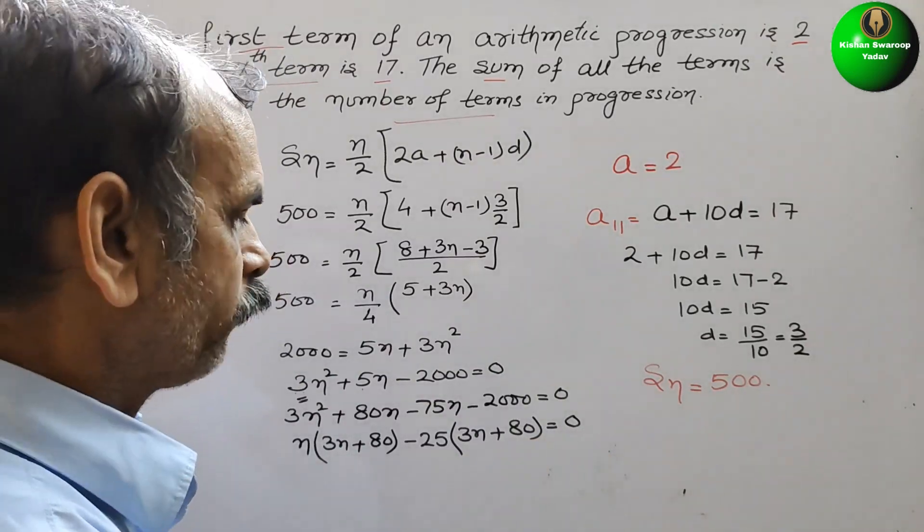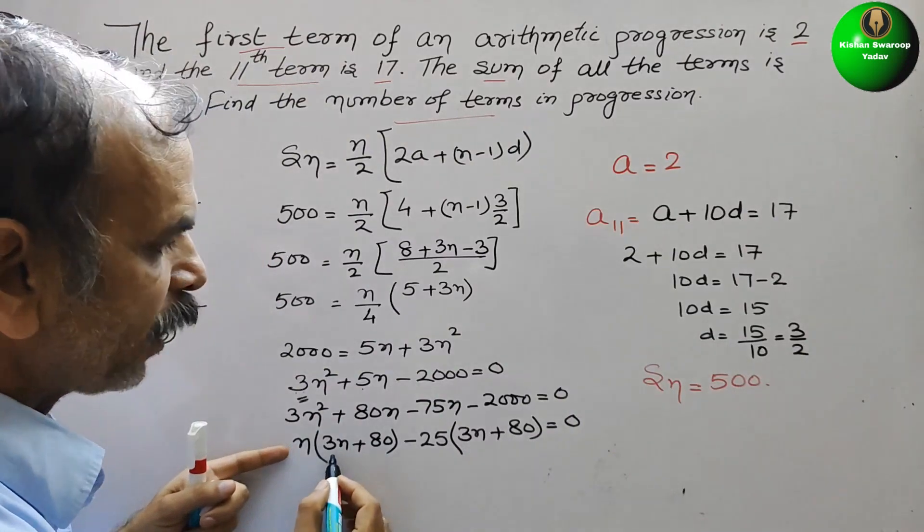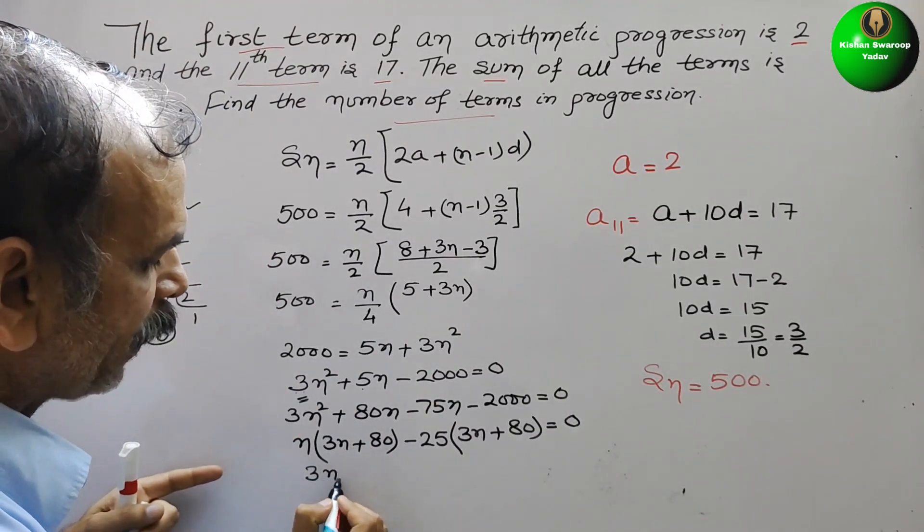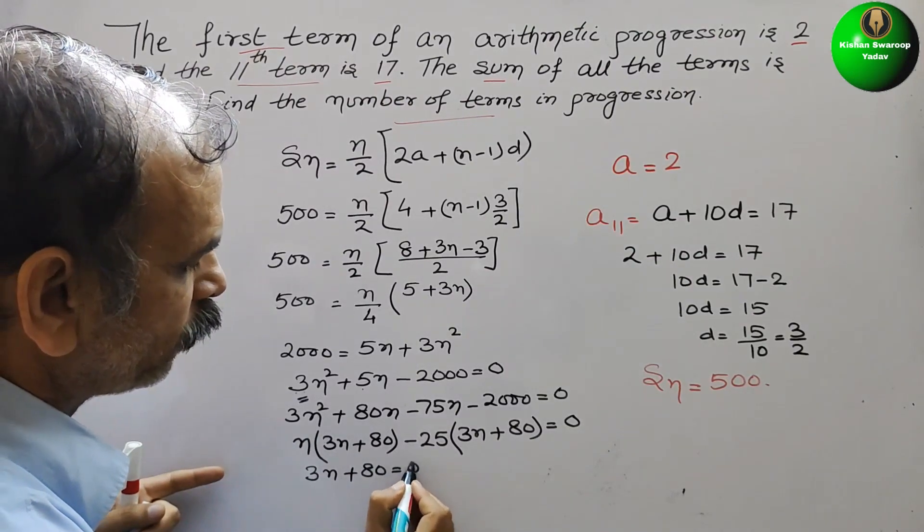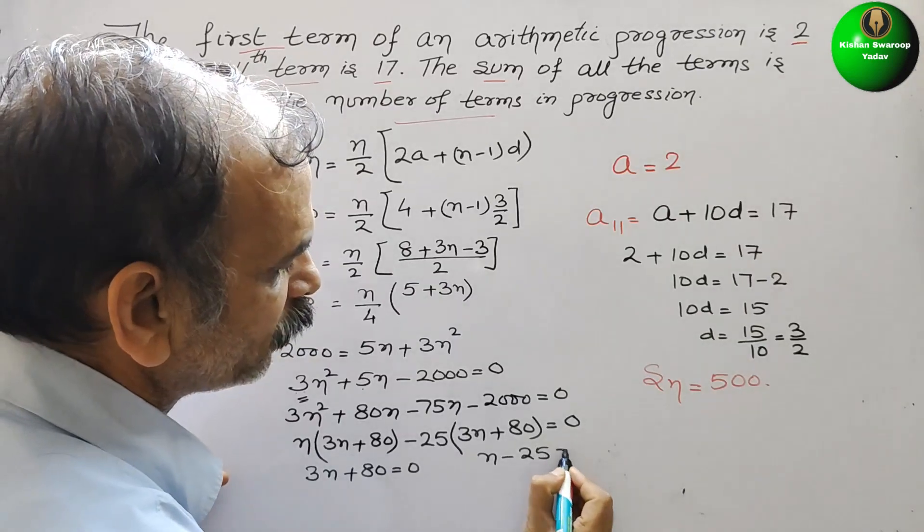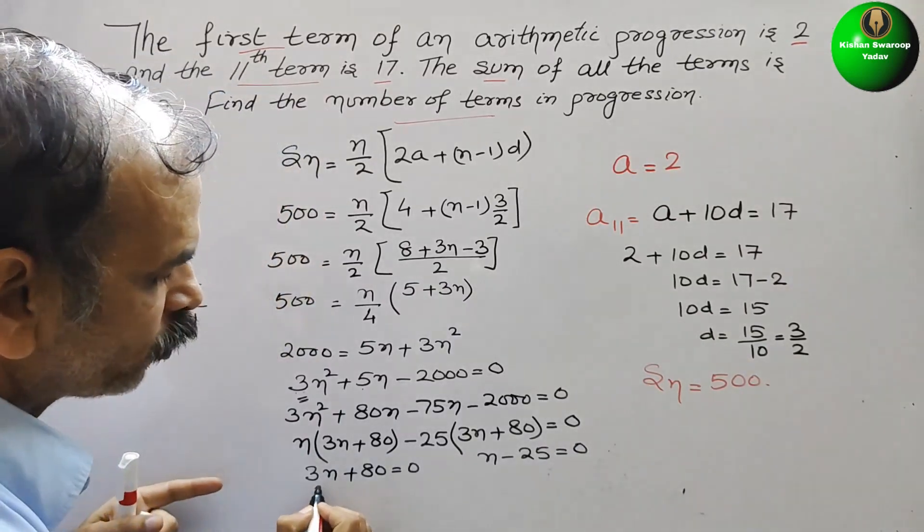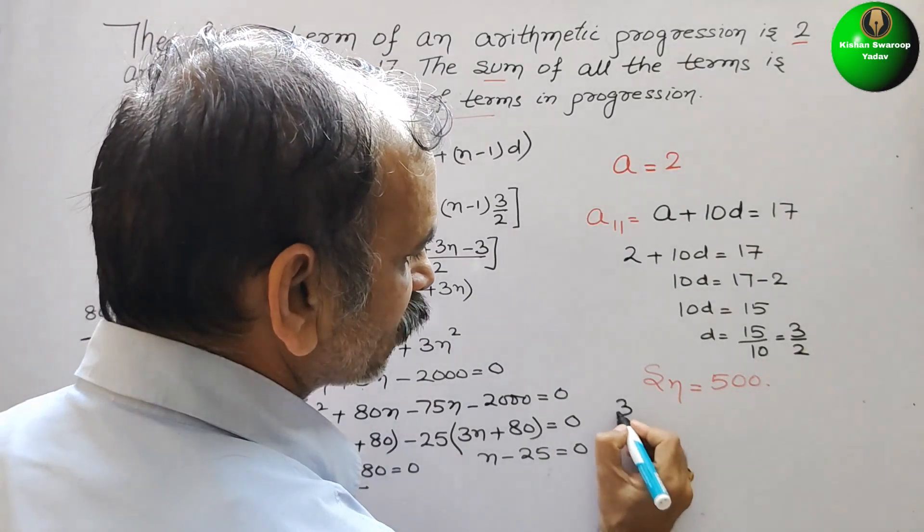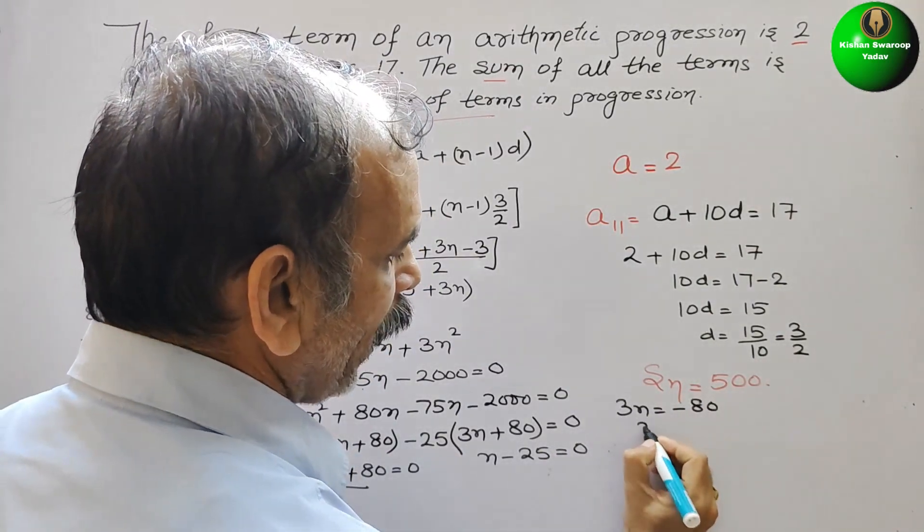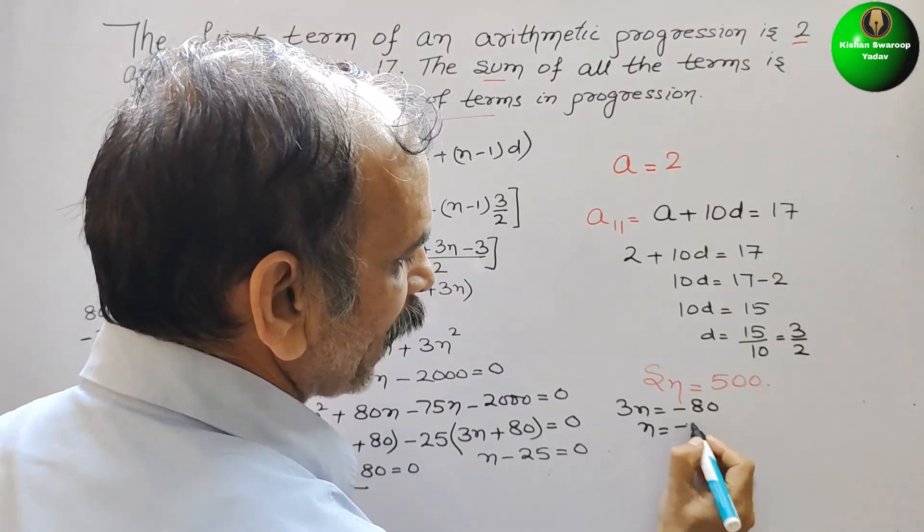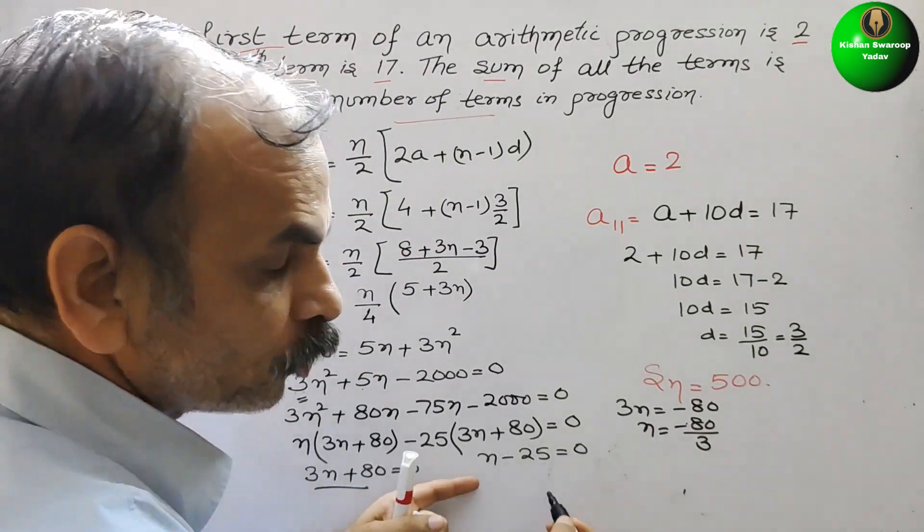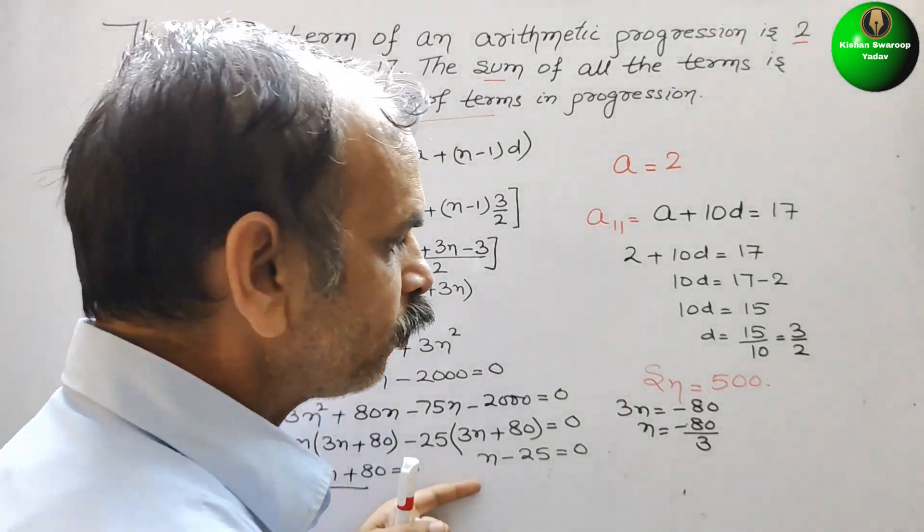If you solve this, what we will get? See this. There are two factors. They are 3n plus 80 is equal to 0, and next is your n minus 25 is equal to 0. If you solve this, what we will get? We will get 3n is equal to minus 80, n is equal to minus 80 by 3. And if you solve this, you will get n is equal to 25.